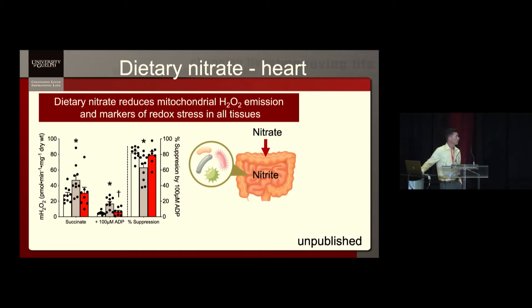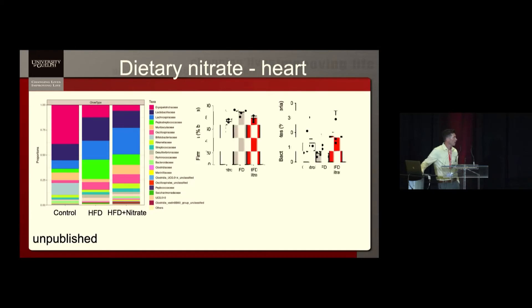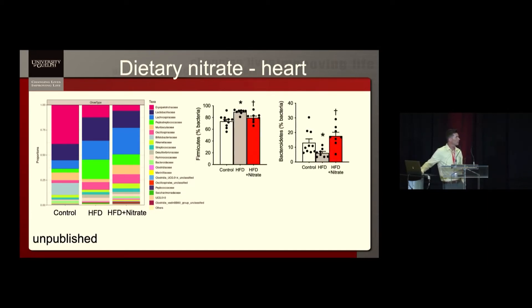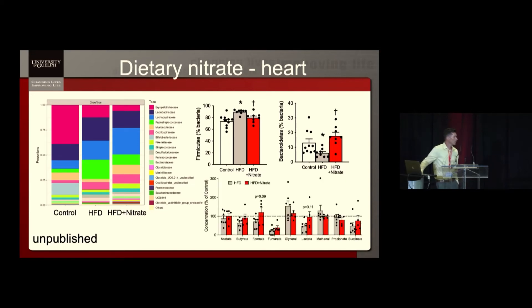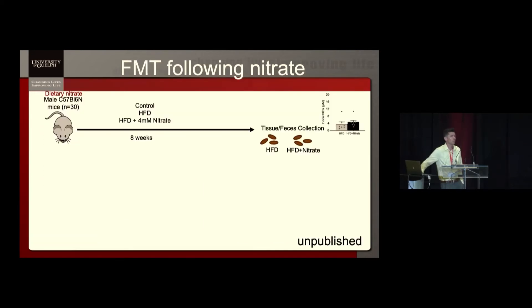When you consume dietary nitrate, you rely on the commensal bacteria to reduce it to nitrite, and that can have an effect if it gets reduced to nitric oxide. But we started to wonder if maybe the metabolism of the gut microbiome, which is known to be altered with a high-fat diet, could also be impacting these responses. We worked with Jonathan Schertzer at McMaster and Emma Allen-Vercoe at Guelph to look at the taxa level. At the phylum level, you see the typical increase in Firmicutes on a high-fat diet and the reduction in Bacteroidetes, but the nitrate prevented those responses. We've looked at typical markers of short-chain fatty acid metabolism, but unfortunately we haven't been able to pinpoint a mechanism. When we looked at the availability of nitrate and nitrite within the feces of these high-fat nitrate-fed animals, there was no increase.